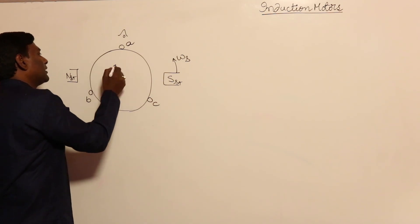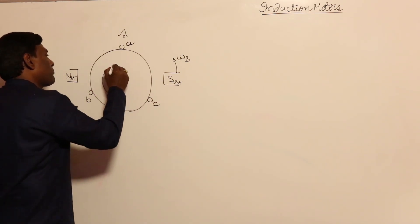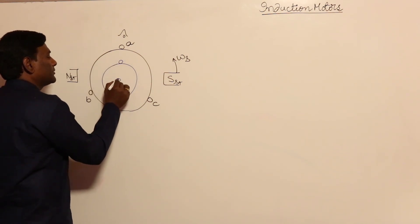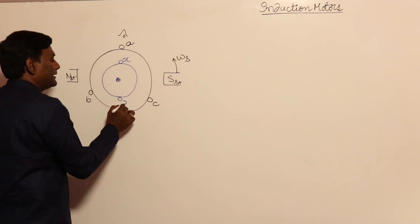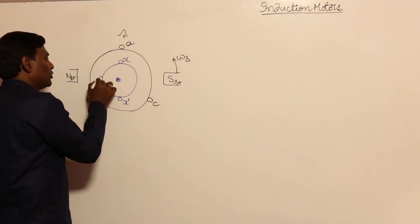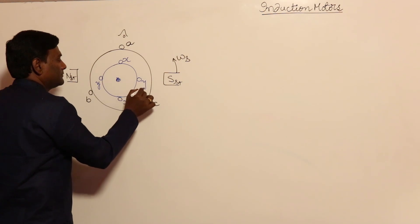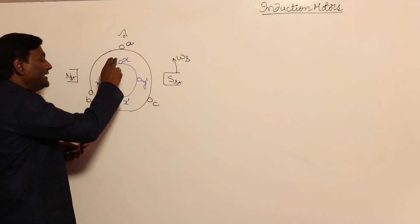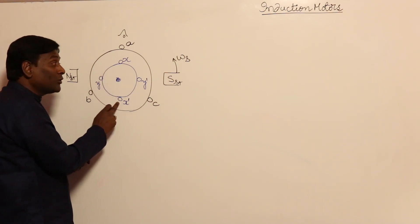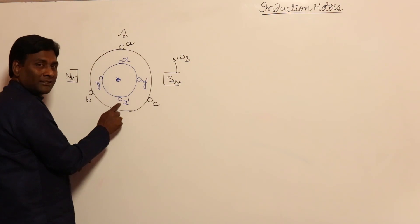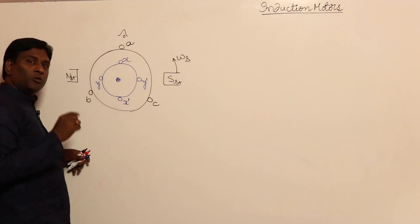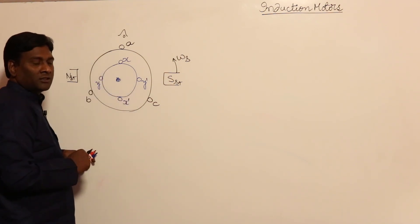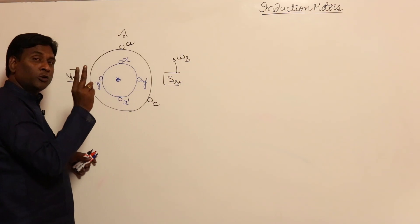Now let us think of the rotor. Previously, we used to have only two conductors, short-circuited — that is X and X dash — and two more conductors Y and Y dash. Previously, if I had only X and X dash, how many slots were there per pole? Two poles are there, two slots were there, so slots per pole were one. Now, if I have four slots for two poles, slots per pole are going to be two.